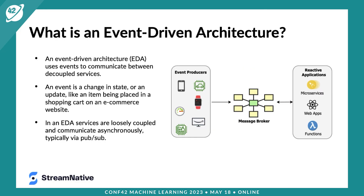Event-driven architecture is a completely decoupled system in which microservices and independent systems communicate with one another asynchronously by exchanging events between them. Rather than making a point-to-point call, you use a message broker as an intermediary to store these events and deliver them to all registered consumers. An event represents something like a change in state to the system, such as an item being placed into a shopping cart, an e-commerce order being checked out, or an item being added to a shipment for delivery.